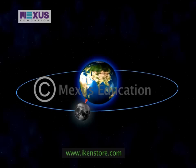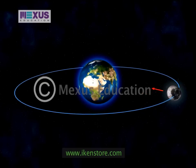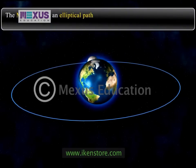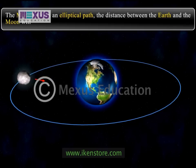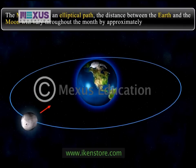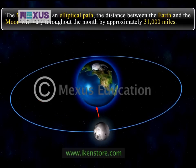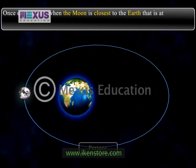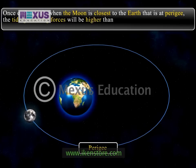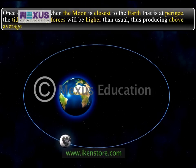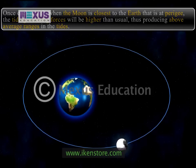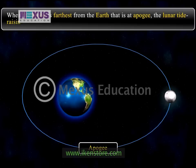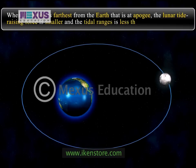The second factor on which the range of the tide depends is the distance of the earth from the moon and the sun. Since the moon follows an elliptical path, the distance between the earth and the moon varies throughout the month by approximately 31,000 miles. Once each month, when the moon is closest to the earth — that is, at perigee — the tide-generating forces are higher than usual, producing above-average ranges in the tides. Approximately two weeks later, when the moon is farthest from the earth — that is, at apogee — the lunar tide-raising force is smaller and tidal ranges will be less than average.